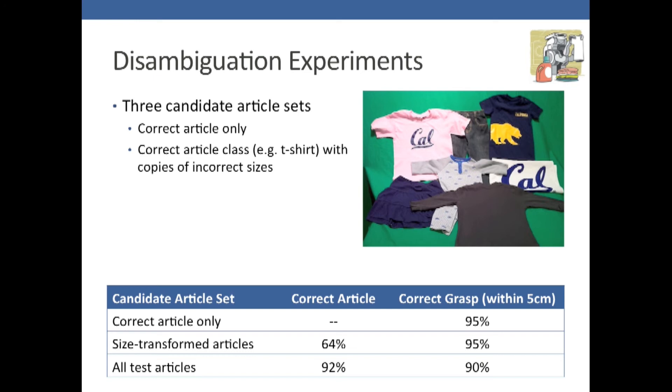In the second test, we added four size transform versions of the correct article for a total of five articles. Each transformation was different by about 5 to 10 centimeters in one dimension. For example, with t-shirts, we would make one of the sleeves longer by 5 or 10 centimeters.